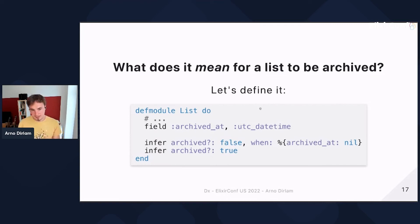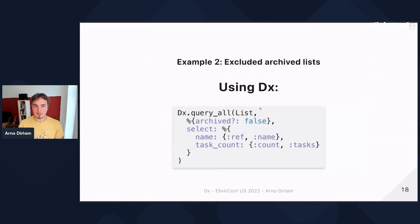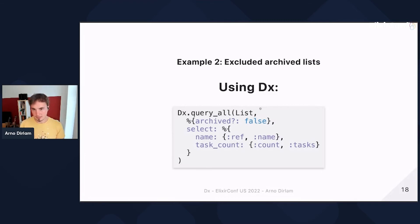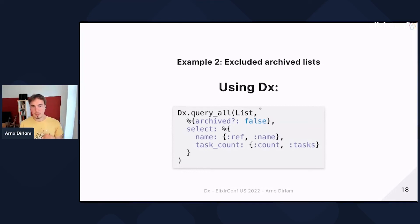Once we define it this way, we can use it in queries. For example, query_all takes three arguments: what to query (lists), a condition (archived is false, to exclude archived lists), and a select (same as before). This is how we can extend the schema, express the logic, express what things mean in terms of rules, and use that for querying or in other ways.